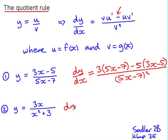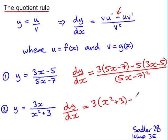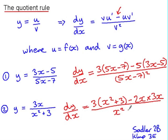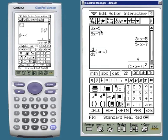In the second quotient rule example, dy/dx is the derivative of the first multiplied by the second, subtract the derivative of the second — that's 2x — multiplied by the first function, all over x squared plus 3. I can edit the quotient from before to 3x over x squared plus 3.